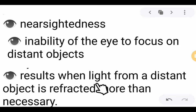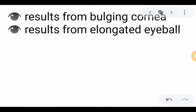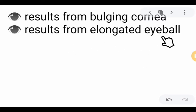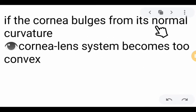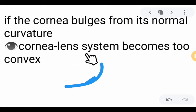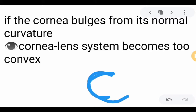Nearsightedness results when light from a distant object is refracted more than necessary. This type of visual defect is most common in youth. This eye defect is usually the result of a bulging cornea and elongated eyeball. What will happen if the cornea bulges from its normal curvature? The cornea-lens system becomes too convex — it bulges outward too much, as shown in this picture.